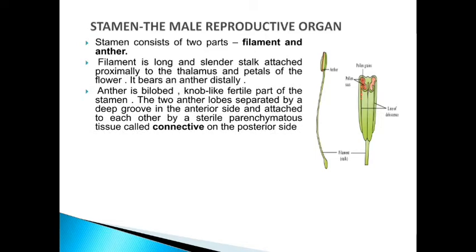Now let us learn about the anther. Anther is a bilobed, knob-like, fertile part of the stamen. It has two lobes. The two anther lobes are separated by a deep groove on the anterior side and attached to each other by a sterile parenchymatous tissue called connective on the posterior side. You may see the red portion shown between the two lobes in the diagram — that portion is the connective.